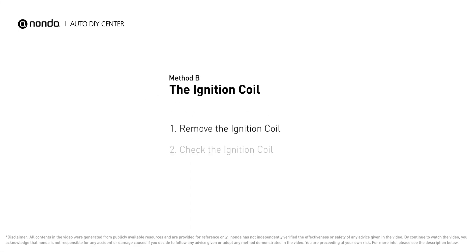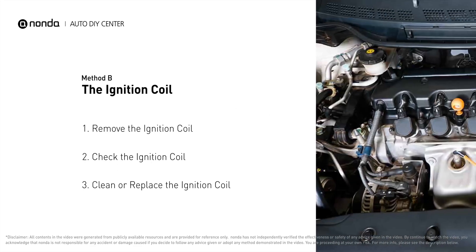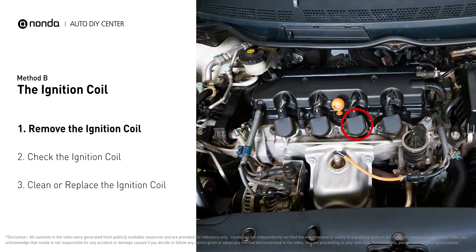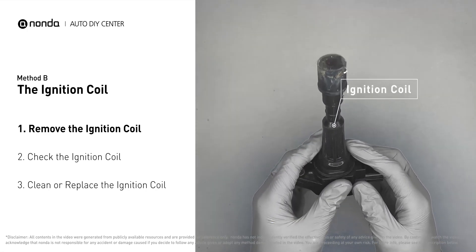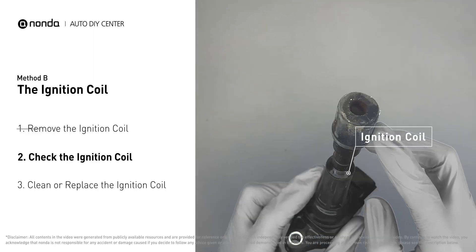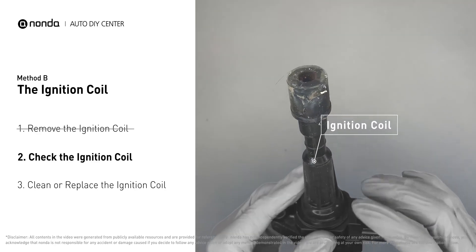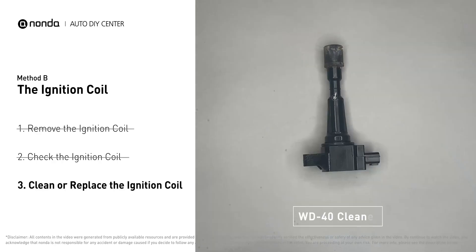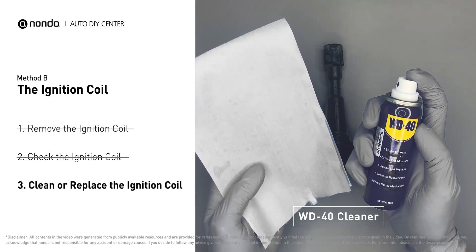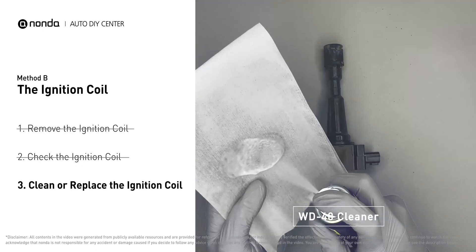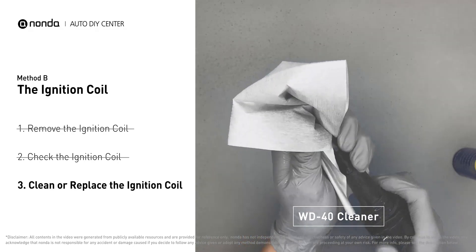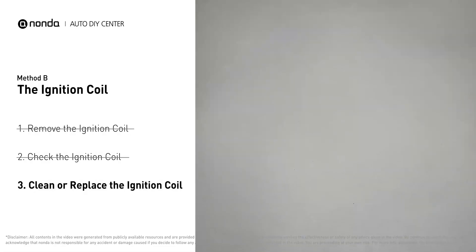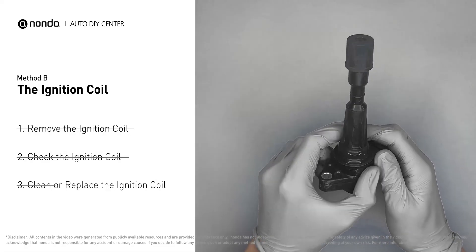Method B: the ignition coil. Ignition coils are usually installed directly at the cylinder head above the spark plug. First, carefully remove the ignition coil from the engine. Check to see if the ignition coil is either stained or damaged. If the ignition coil is covered with engine oil or stains, simply clean it with a WD-40 cleaner. Otherwise, replace the damaged ignition coil with a new one.